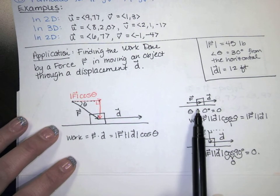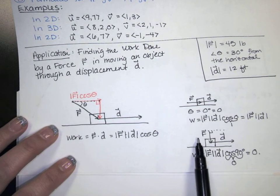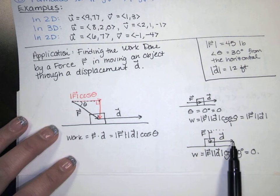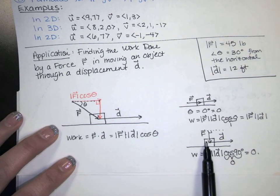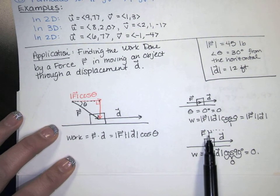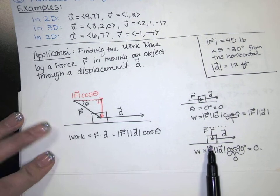So if I want to be as efficient as possible, I want my force to go in the same direction as the displacement. If I want to be as inefficient as possible, you know, if I want a force that does not actually move the object at all, I act at a 90 degree angle.